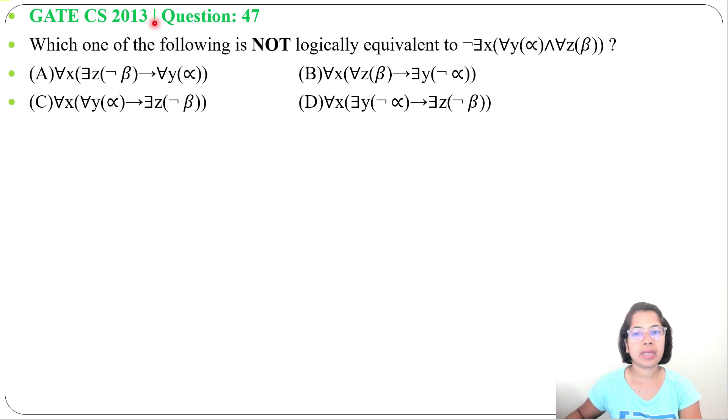Let's solve one previous question of mathematical logic. This question was asked in GATE CS 2013, question number 47. Which one of the following is not logically equivalent to this? Then four options are given.